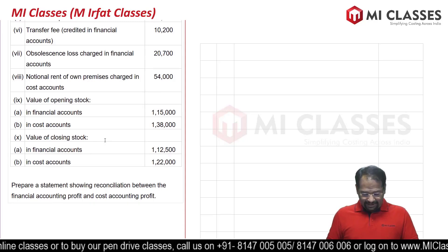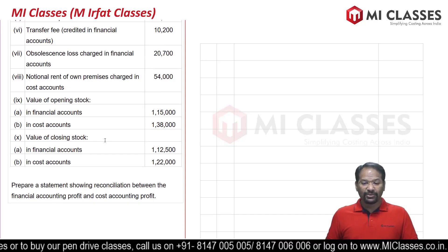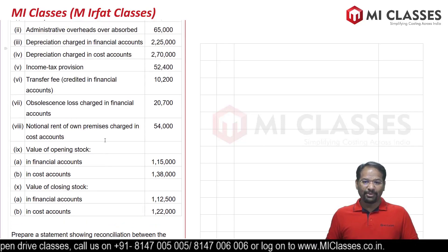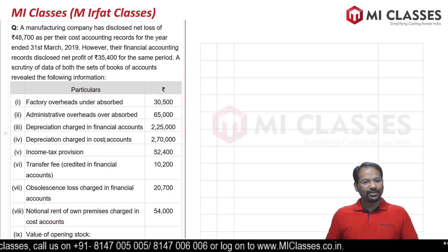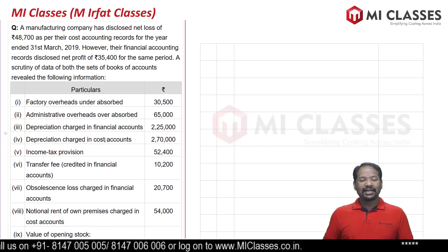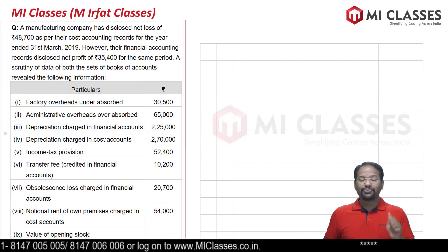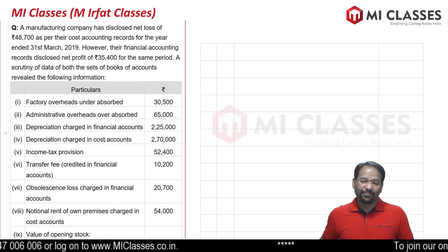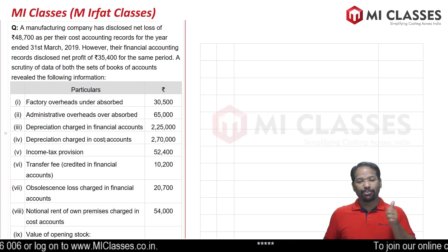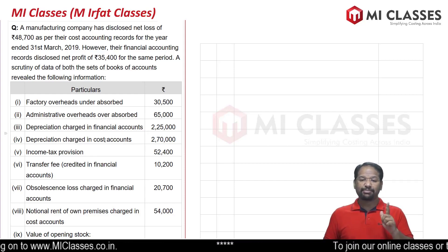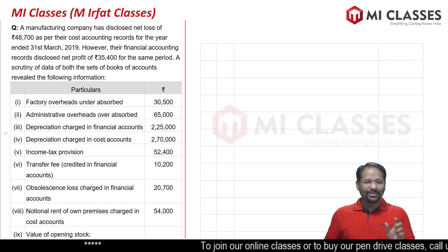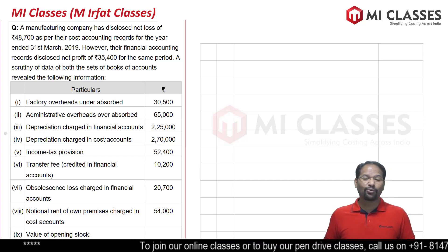The question asks us to prepare a statement showing reconciliation between financial accounting profit and cost accounting profit. This question has been made a little simpler because we don't have to search for the reasons for differences in profit as per cost records and as per financial records, but at the same time it is a little complicated because the number of adjustments are quite large.